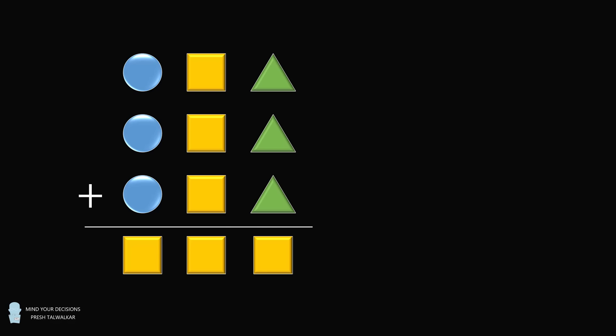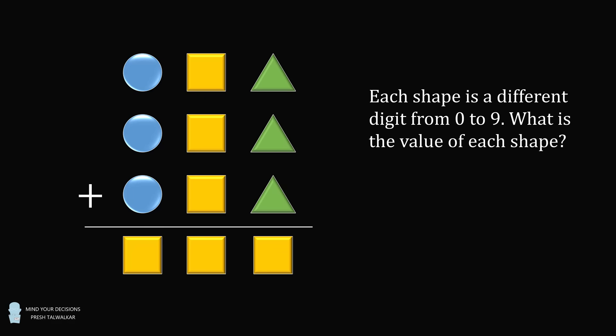We have an equation. The number circle-square-triangle is added to circle-square-triangle, added to circle-square-triangle, and the resulting number is square-square-square. Each shape is a different digit from 0 to 9. What is the value of each shape?